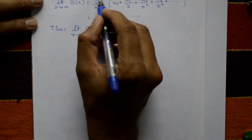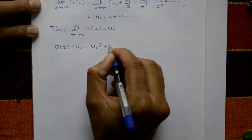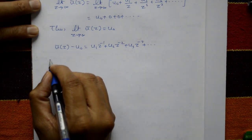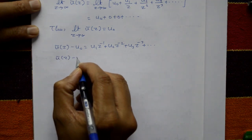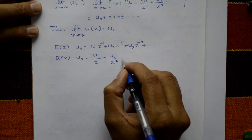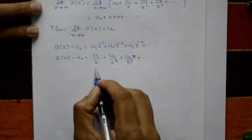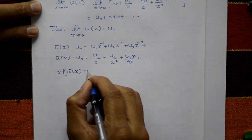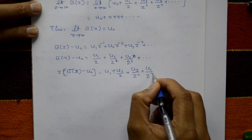Now, shifting to the left-hand side: U̅(z) minus u₀ equals u₁ z⁻¹ plus u₂ z⁻² plus u₃ z⁻³ plus so on. Applying the limit, we get z times (U̅(z) minus u₀) equals u₁ plus u₂ over z plus u₃ over z² plus u₄ over z³ plus so on. So u₀ is accounted for and we want u₁.